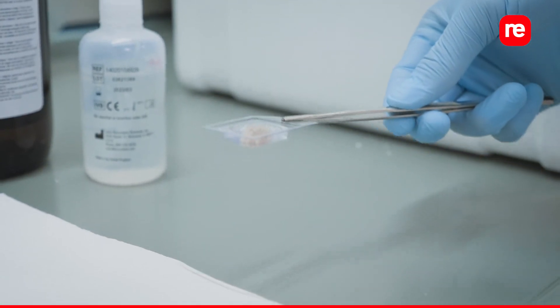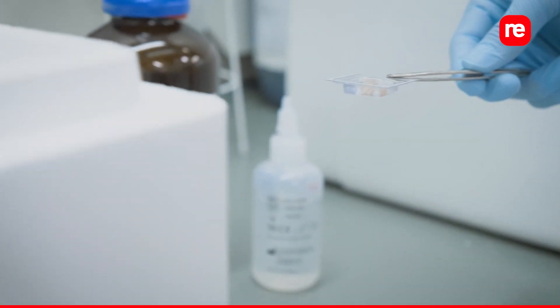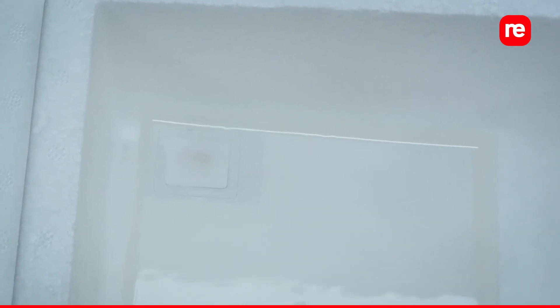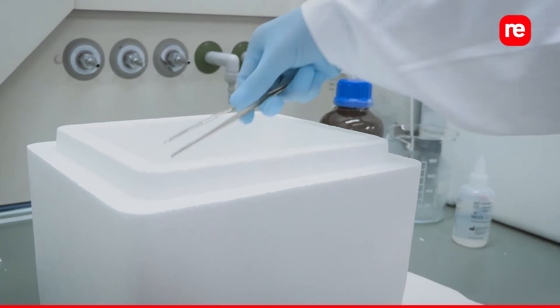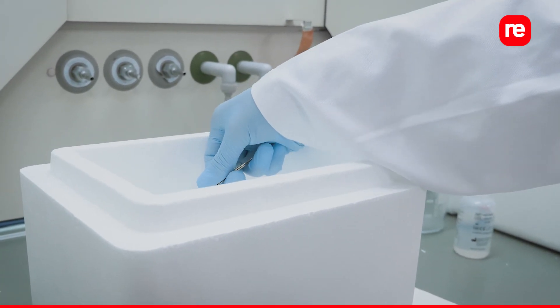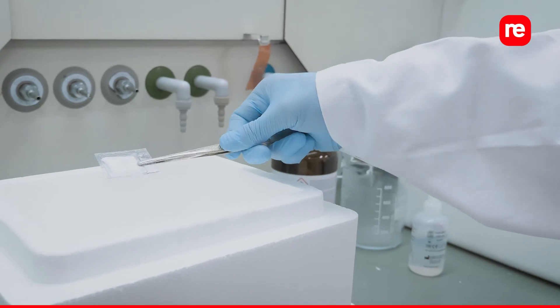Submerge the mold in isopentane for about two minutes until the OCT is completely white. Instead of using a beaker, it can be easier to submerge the sample in a reservoir to keep the OCT in place.